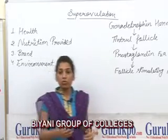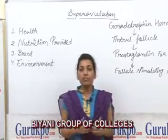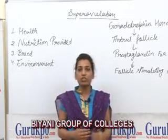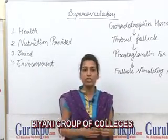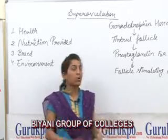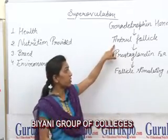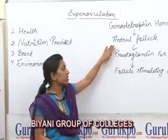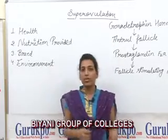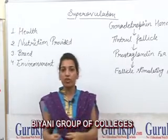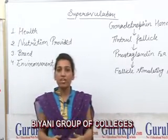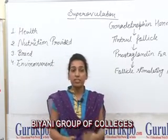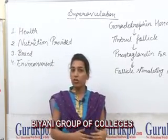Ovarian follicles grow and fill with fluid, and the space which is filled with fluid is known as the antrum, and the follicles are known as antral follicles. Normally an ovarian follicle develops and releases a single egg, but in the case of superovulation,